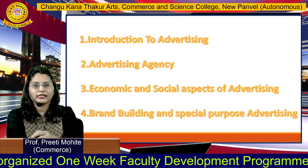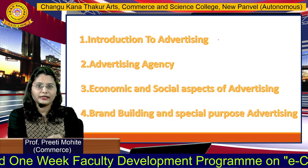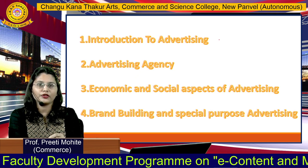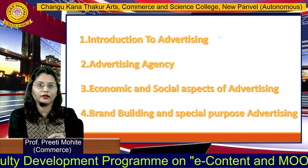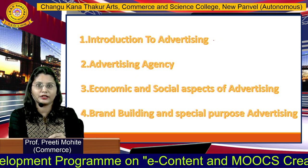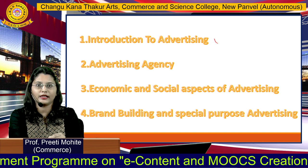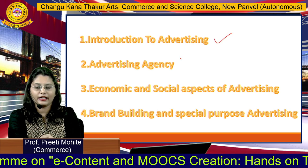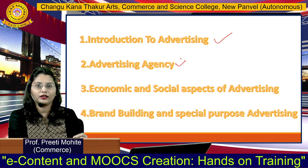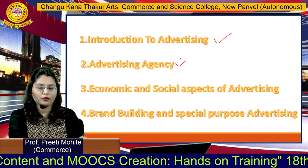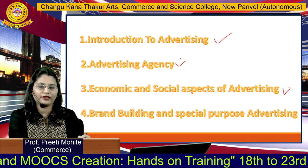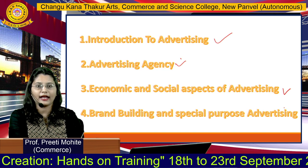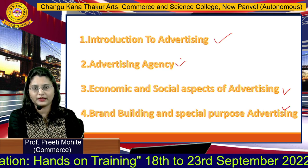This is the syllabus, for S5 BCom students. These four modules are there in the third semester. The first one is introduction to advertising, second is advertising agency, third is economic and social aspects of advertising, and the last one is brand building and special purpose advertising.